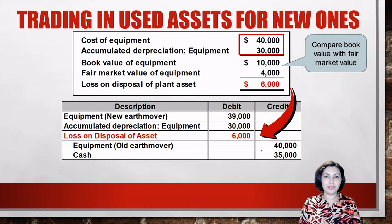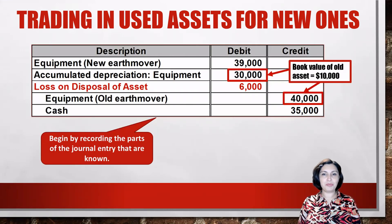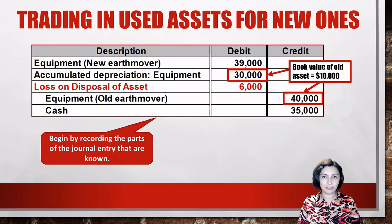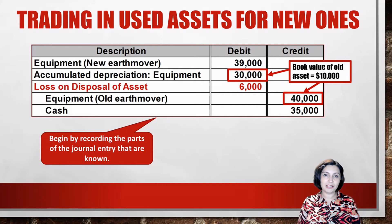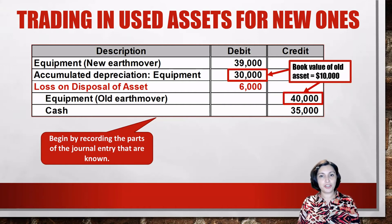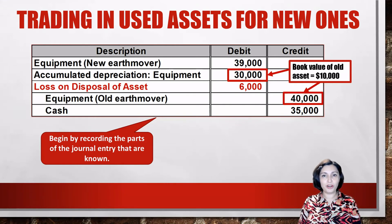Now let's look at the entry to record the disposal. Begin by recording the known parts: the old earthmover is being given up, so we debit accumulated depreciation for $30,000 and credit the old equipment account for $40,000. Next, we credit cash for $35,000 because it is being given up in the exchange, and we debit loss on disposal of asset for $6,000. Now debit the new equipment account for $39,000, which represents the fair value of the assets given up — cash of $35,000 plus the fair market value of the old earthmover of $4,000.